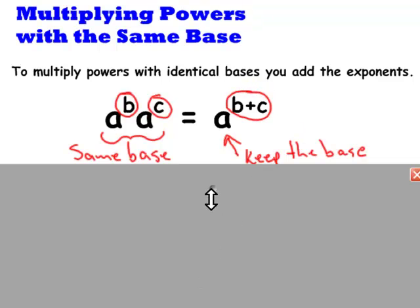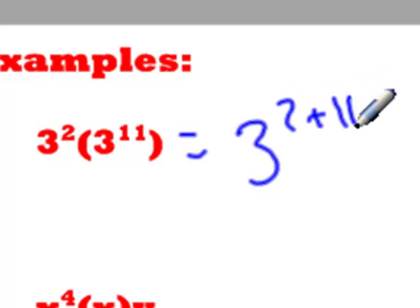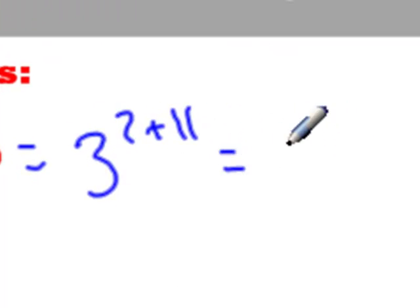3 squared multiplied by 3 to the power of 11. The base is 3, so I'll write the base out, and then I need to add 2 plus 11 to account for both of the exponents in the question. That will simplify as 3 to the power of 13.